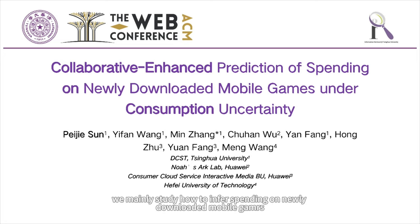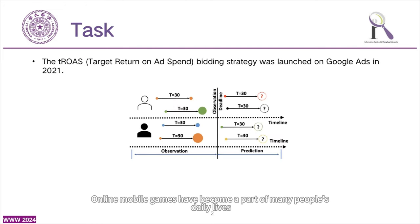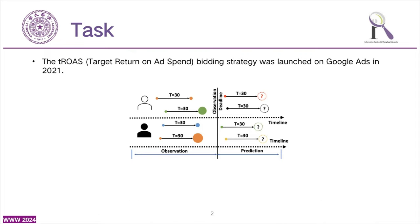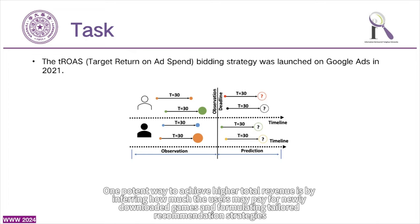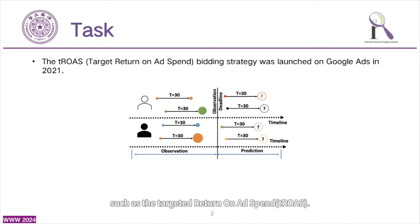In this paper, we mainly study how to infer spending on newly downloaded mobile games. Online mobile games have become a part of many people's daily lives. Different game developers strive to earn money from mobile game players. One potent way to achieve higher total revenue is by inferring how much users may pay for newly downloaded games and formulating tailored recommendation strategies, such as the targeted return on ad spend, TROAS.